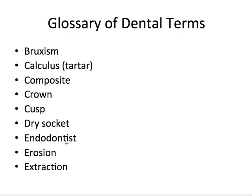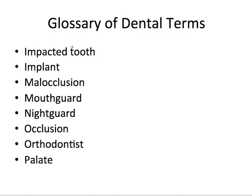An endodontist is an ADA-recognized specialist who treats problems of the tooth nerve or pulp and bone infections from infected nerves, with procedures such as root canal treatment. Erosion is the loss of dental hard tissue by acids not caused by bacteria. An extraction is the removal of all or part of a tooth. An impacted tooth is blocked from coming through the gums by another tooth, bone, or soft tissue. An implant is a device placed into the jawbone to replace a missing tooth or hold a prosthesis such as a crown, bridge, or denture.